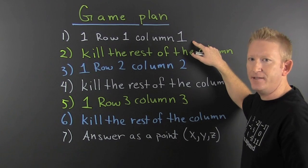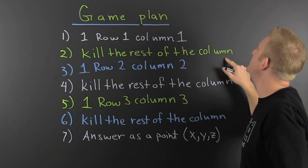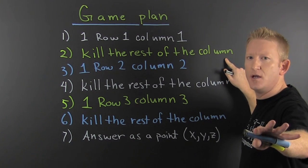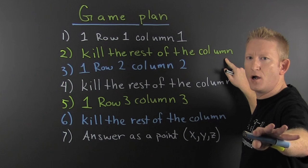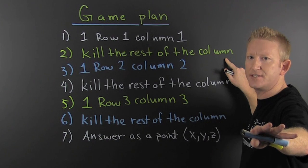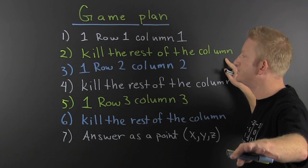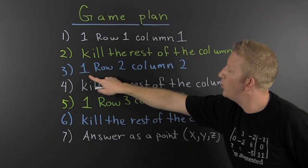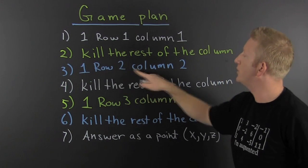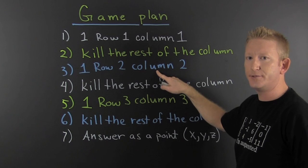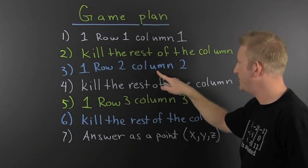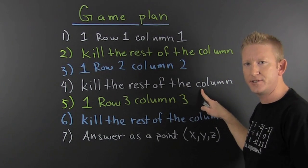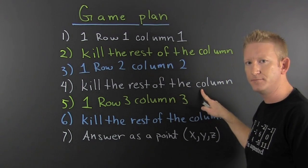And then we're going to use it to kill the rest of that column. Then we're going to get a 1 in row 2, column 2, so that we can kill the rest of the numbers in that column.